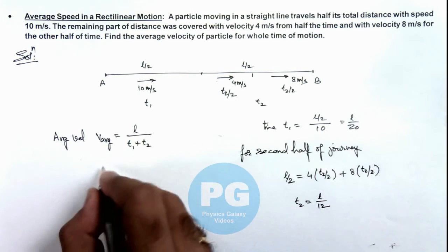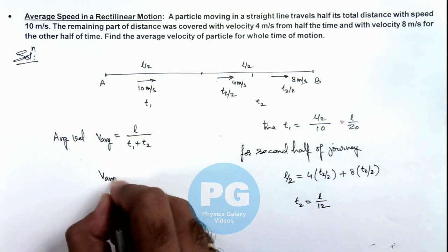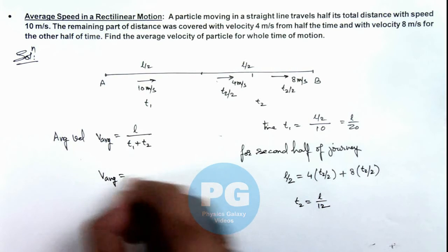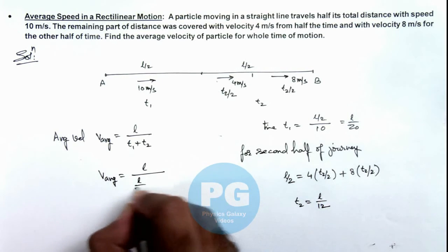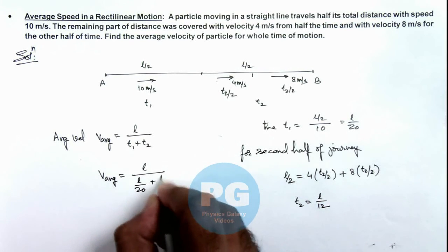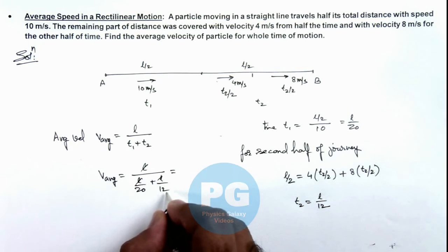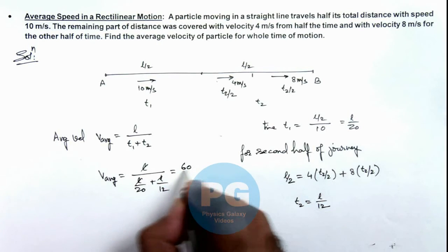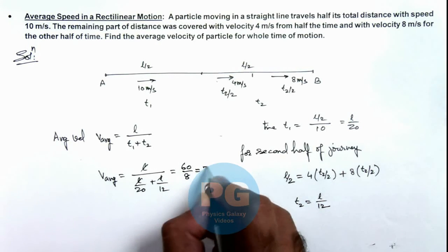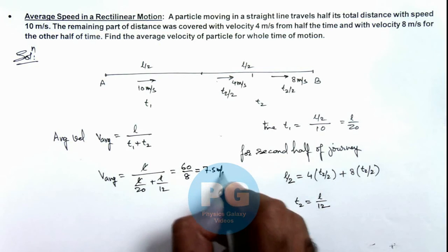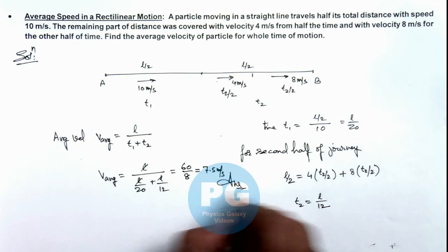If we substitute t1 and t2 over here, we are getting the average velocity as L divided by L by 20 plus L by 12. Here L gets cancelled out, and on simplifying this, we are getting the value 60 by 8, that is equal to 7.5 meters per second. That is the final result of this problem.